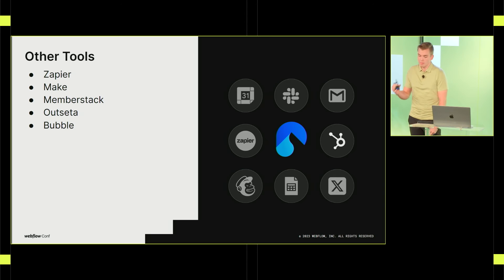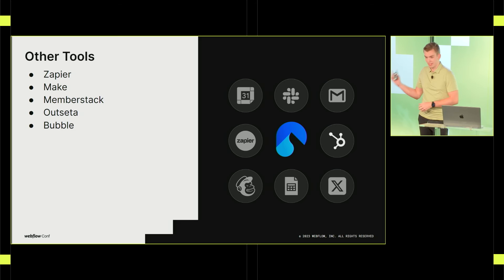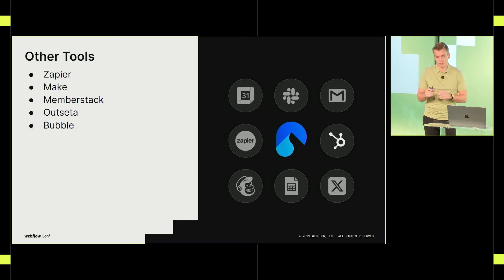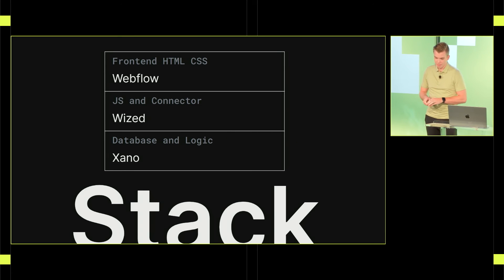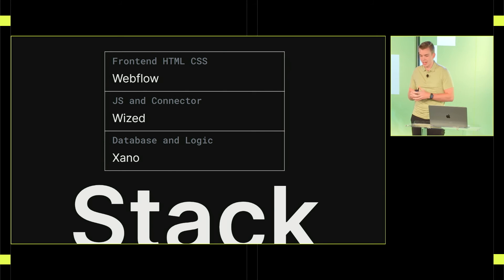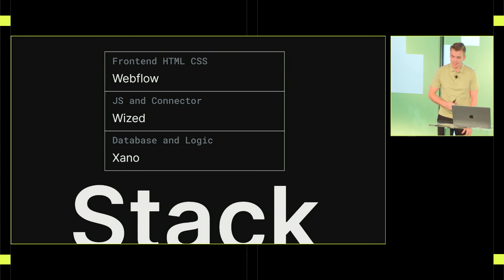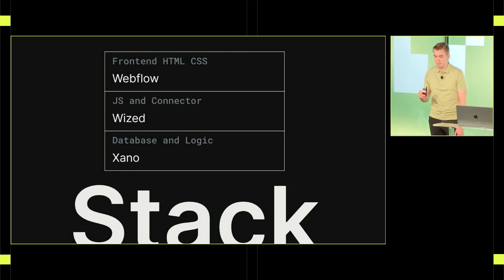There are a plethora of no-code tools out there. Some of us have used Zapier and Make with Webflow to close the gap, but these tools don't solve for rendering data on page in real time like you just saw. Some even tried Bubble and Outseta. But why should we be forced to use tools that try to do everything at a good level when we can use specific tools that are great at their respective jobs? That's where the WWX stack comes in — Webflow, Wizd, and Xano — and it is ultra-powerful.